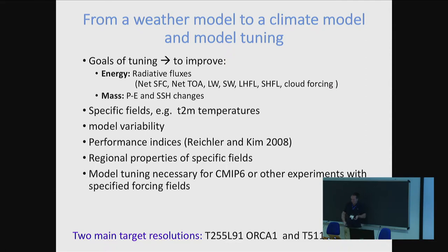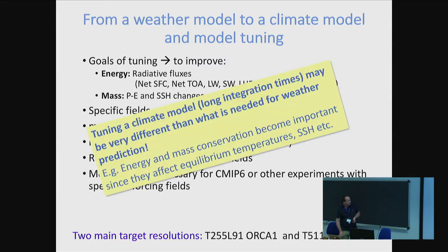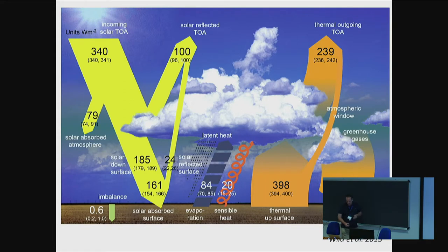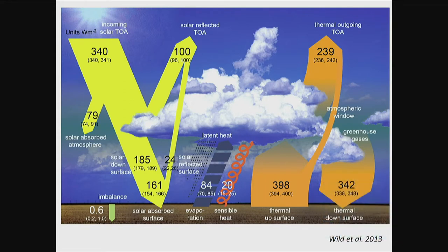Some of the tuning you do may be specific for having made some assumptions about the forcing fields - say ozone or aerosols, et cetera. Regarding the radiative imbalance, there are very good estimates of this, including recent ones from satellite. All these numbers have uncertainties which are still unfortunately quite large - basically always something like plus or minus 0.5. But still we can use the central values as a reference, and we would like the model to be similar to what is observed.